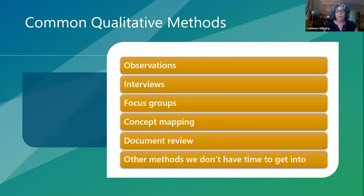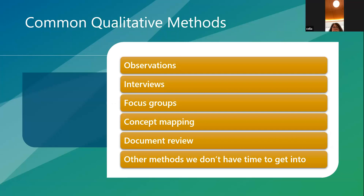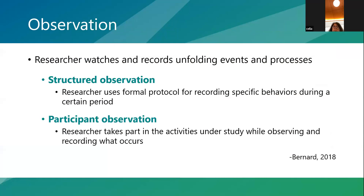Methods commonly used in implementation science include observations, interviews, focus groups, concept mapping, and document review, among others. Observations involve watching and recording events and processes as they unfold in real time. There are two types: structured observations, using a formal protocol for recording specific behaviors during a certain period, and participant observation, most closely associated with anthropology, where the researcher takes part in the activities they're studying while observing and recording what occurs.